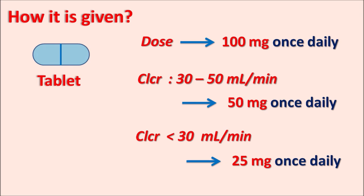In summary, cetagliptin is a DPP-4 inhibitor used as monotherapy or in combination therapy. It primarily inhibits the metabolism of incretin hormones GIP and GLP-1, increasing insulin secretion and reducing glucagon release for better glycemic control. Acute pancreatitis is an important precaution; nasopharyngitis, upper respiratory tract infections, and hypoglycemia are notable side effects. The dose is 100 mg once daily, reduced to half or one-fourth in renal impairment.